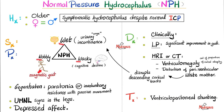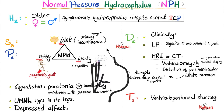What does ventriculoperitoneal mean? Ventriculo refers to the ventricles of the brain, which are continuous with the central canal of the spinal cord. You then connect the subarachnoid space surrounding the spinal cord to the patient's belly — the peritoneum — hence ventriculoperitoneal shunt. The ventricles are enlarged, so let's drain some of that fluid toward the peritoneum. That is the main course of treatment for these patients, though like any intervention, it has some complications.